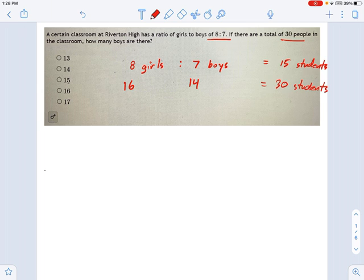You might have gone a little more extreme. You might have said, what if there's 24 girls and 21 boys? That's a pretty big classroom. That would be 45 students. And that's a little bit past the mark.